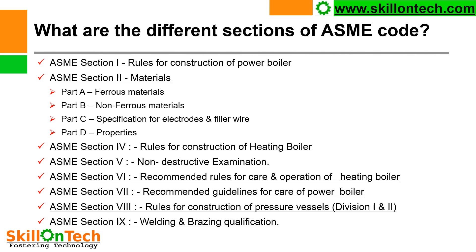What are the different sections of ASME code? ASME Section 1: rules for construction of power boilers. ASME Section 2 is used for materials — Part A for ferrous materials, Part B for non-ferrous materials, Part C specification for electrode and filler wire, Part D properties. ASME Section 4: rules for construction of heating boilers. ASME Section 5: non-destructive examinations. ASME Section 6: recommended rules for care and operation of heating boilers. ASME Section 7: recommended guidelines for care of power boilers. ASME Section 8: rules for construction of pressure vessels, Division 1 and Division 2. ASME Section 9: welding and brazing qualifications.